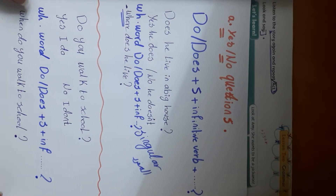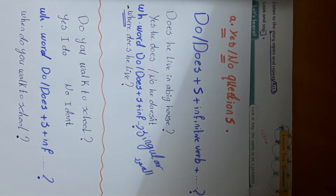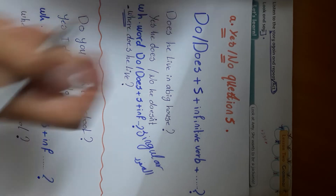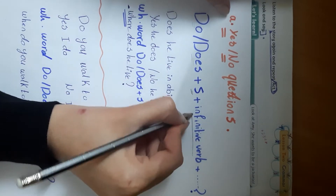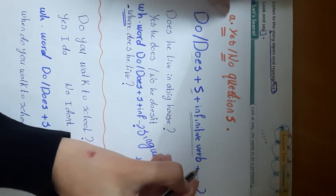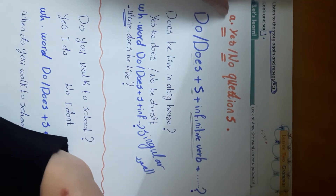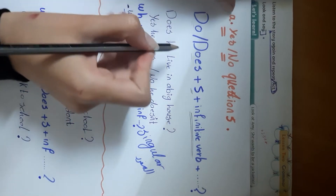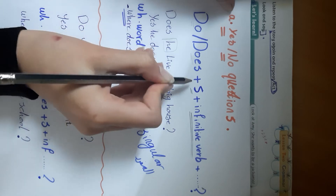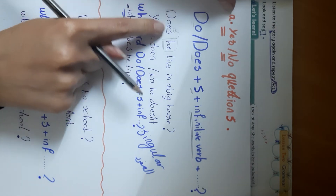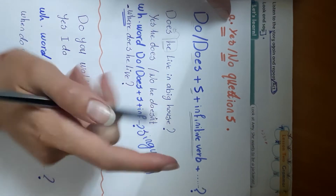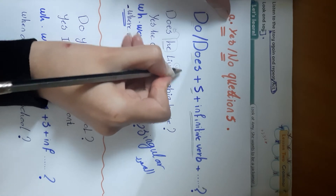Now let's go to yes/no questions and WH word questions. Yes/no questions begin with 'do' or 'does' plus the subject plus the infinitive verb plus complement plus question mark. For example: 'Does he live in a big house?' — we use 'does' because 'he' is singular.